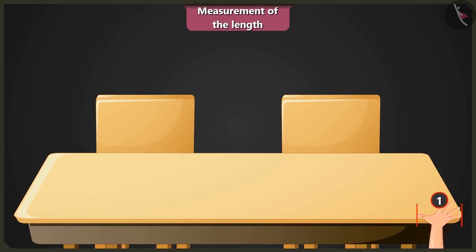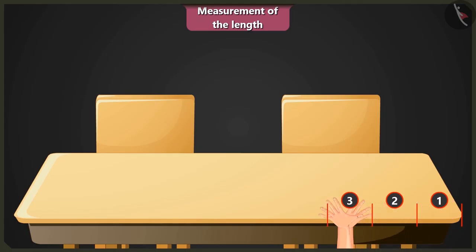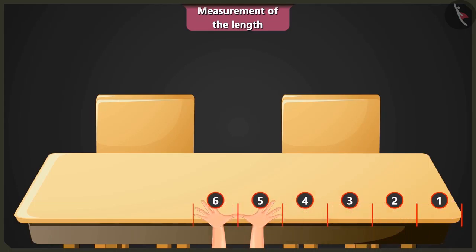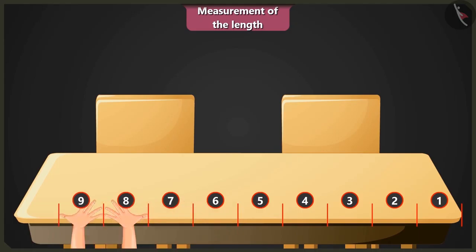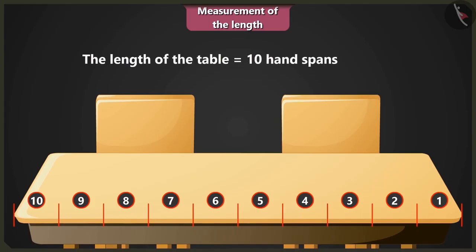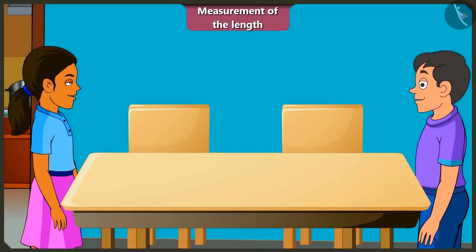Then 1, 2, 3, 4, 5, 6, 7, 8, 9 and 10. The length of this table is equal to 10 handspans of my palm. This is the correct measurement.